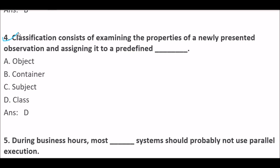Classification consists of examining the properties of a newly presented observation and assigning it to a predefined — blank space. Option A: Object. Option B: Container. Option C: Subject. Option D: Class. Right answer is Option D — Class. Classification consists of examining the properties of a newly presented observation and assigning it to a predefined class.